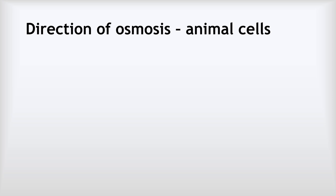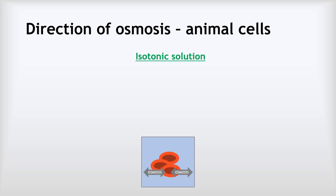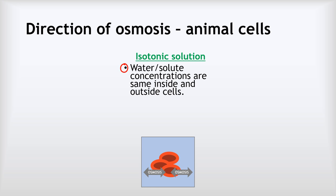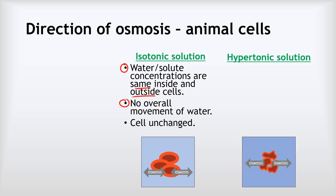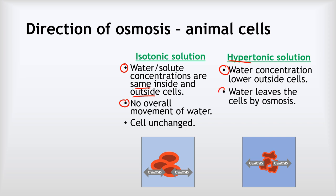With animal cells, osmosis can have a slightly different effect. The happy state for an animal cell is to be in an isotonic solution, where the water and solute concentrations are the same inside and outside the cell. This means there's going to be no overall movement of water in or out of the cell because the water concentration is equal both inside and outside — there's no water concentration gradient. Similar to plant cells, if we place these in a hypertonic solution, the water concentration will be lower outside the cells, and therefore water will leave the cells by osmosis and the cells will become flaccid and shrivel up.